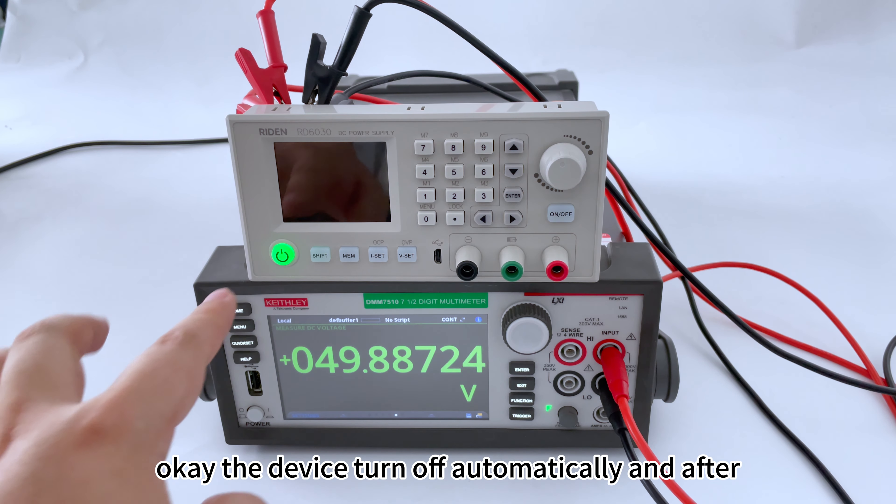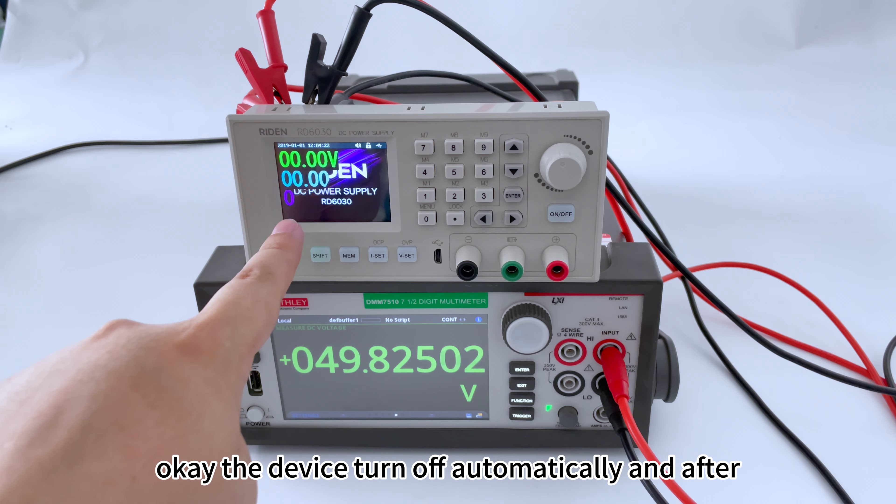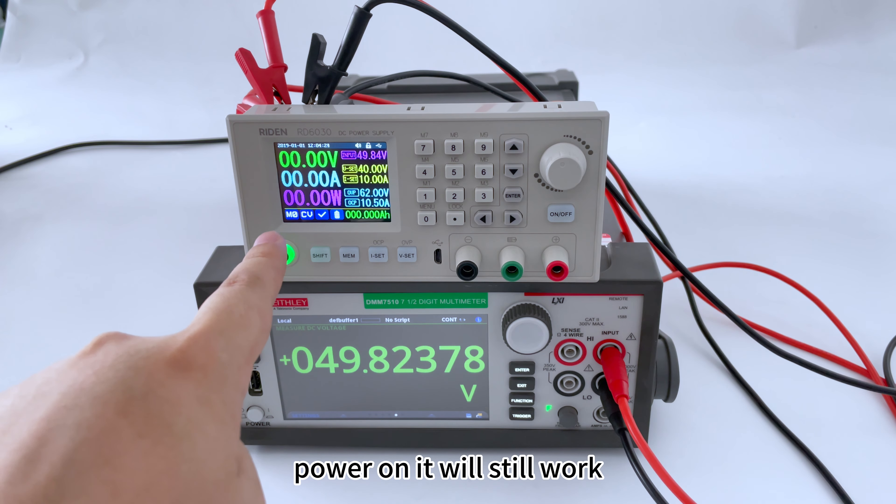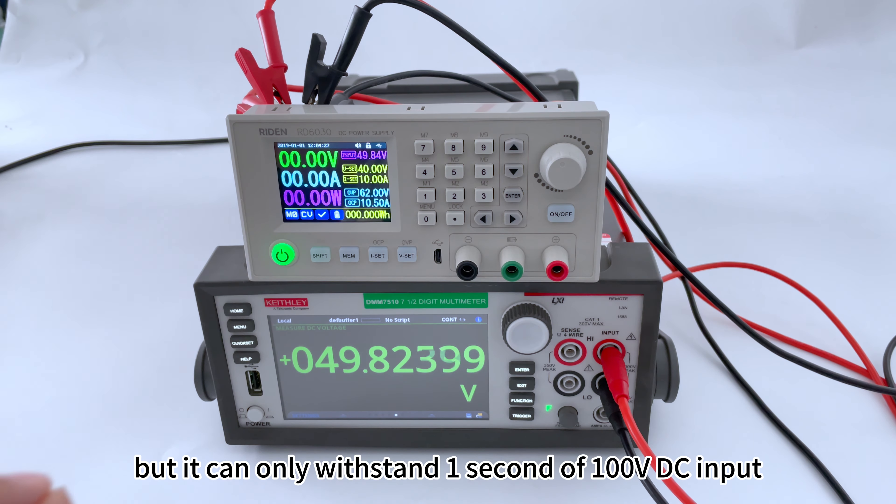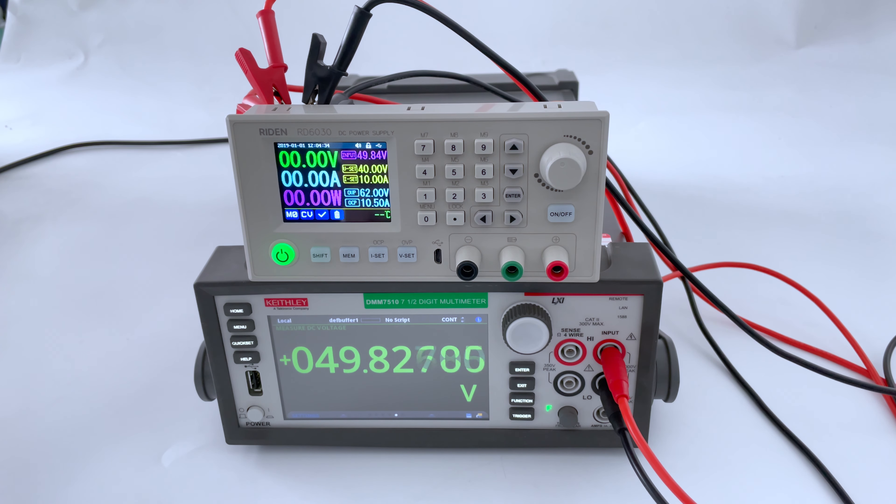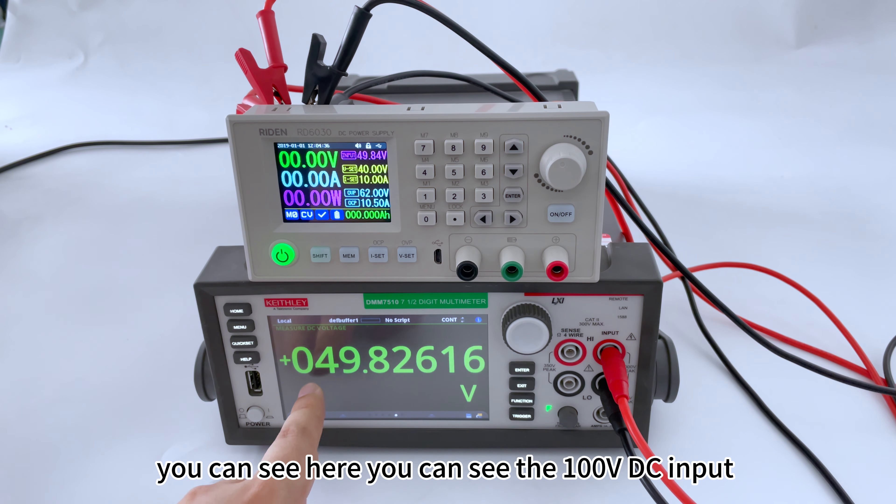The device turns off automatically, and after power on it will still work. But it can only withstand one second of 100 volt DC input. You can see here the 100 volt DC input at the input, the device will turn off automatically.